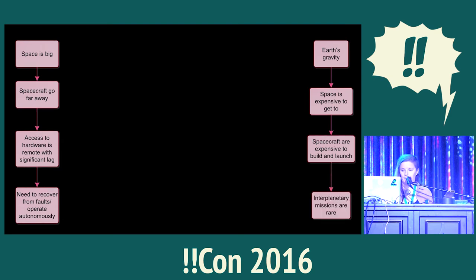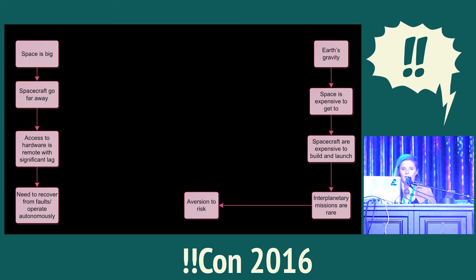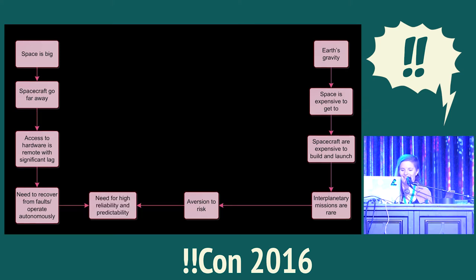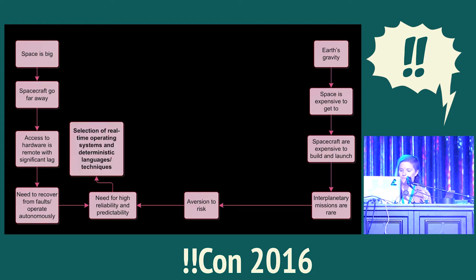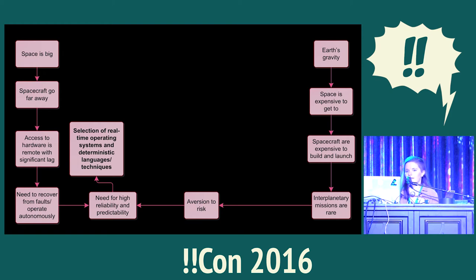As a result of being expensive, interplanetary missions are rare, and the people who run them and pay for them are a little averse to risk. So we need spacecraft to be highly reliable and to act very predictably. As a result, we always pretty much choose real-time operating systems and use deterministic languages and techniques.